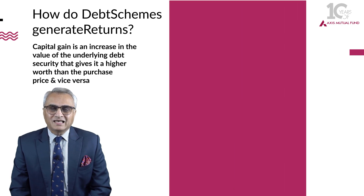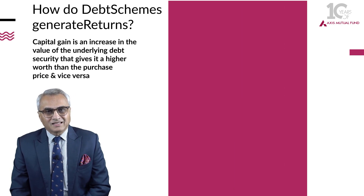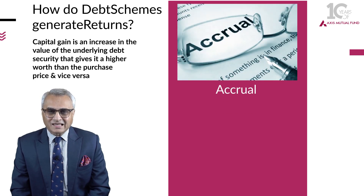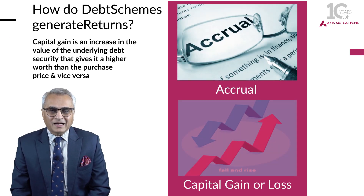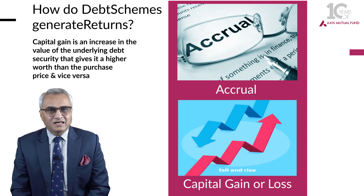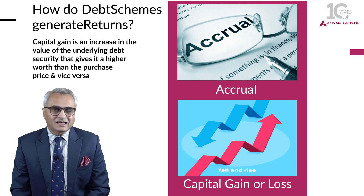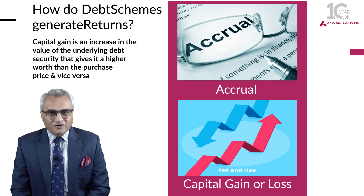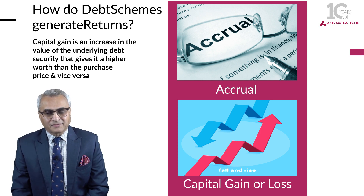Now let us understand how debt schemes generate returns. Debt schemes generate returns through accrual plus capital gains, or accrual minus capital loss. What is accrual for investors? Accrual is nothing but the yield which they have captured at the time of investing in that debt space — it can be different from the coupon.